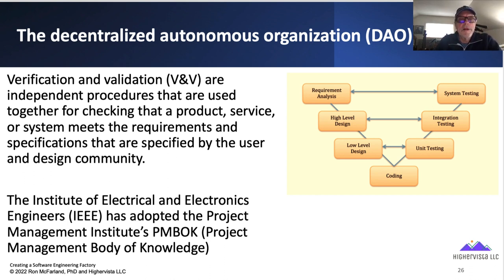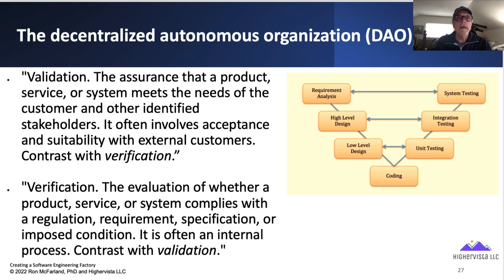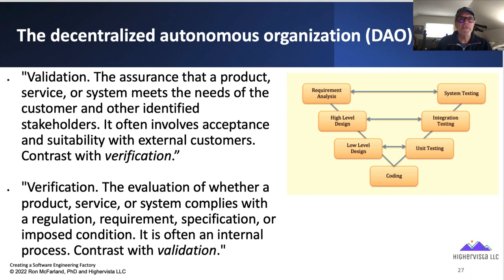Validation is the assurance that a product, service, or system meets the needs of the customers and other identified stakeholders. It involves acceptance and suitability testing with external customers — often having external customers and perhaps other consultants involved in the validation of the software product, as well as the hardware components. Verification is the evaluation of whether a product, service, or system complies with a regulation, requirement, specification, or imposed condition — and it's often an internal process. Contrast that with validation: V&V is closely matched, but verification takes on a different aspect of regulation and compliance.